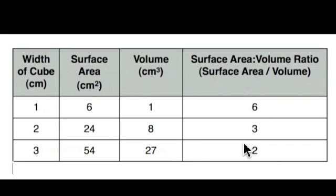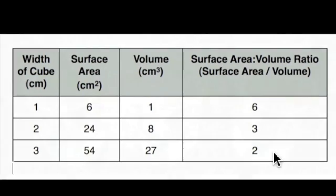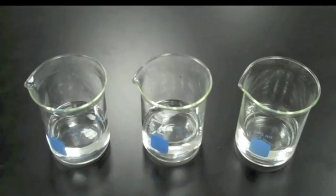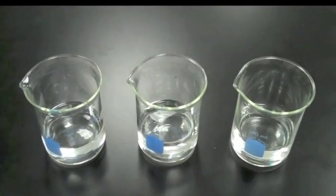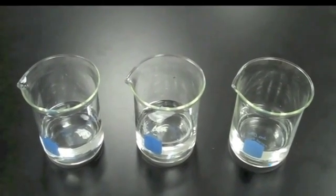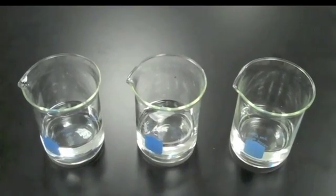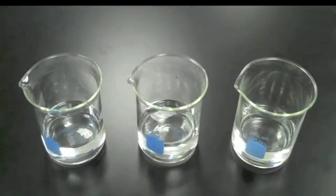What this means is that the greater the size of the cell, the less surface area it has relative to its volume. Here our beakers of hydrochloric acid represent the raw materials which need to enter the cell from the outside in order for its metabolic reactions to take place.